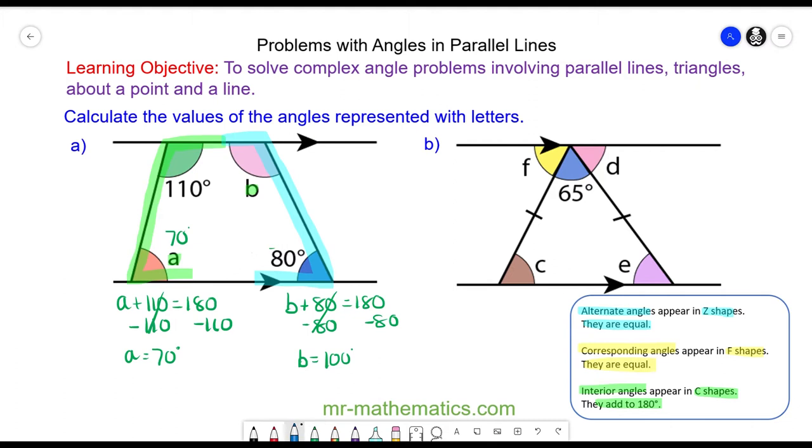And we can check that this is right because we have four angles in a quadrilateral and they should add up to make 360. So 110, which is a green angle, plus angle A which is 70, plus angle B which is 100, plus the 80 degree angle, and that does add up to make 360 degrees.